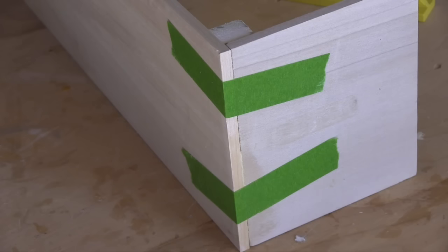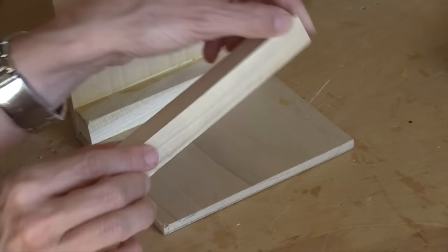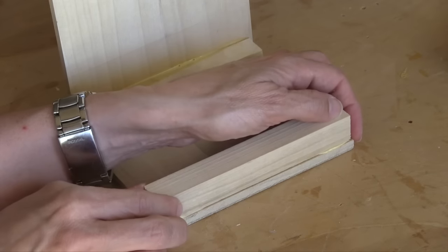Tape works really well to hold everything in place while the glue dries, but you could also use clamps. I glued the other two pieces to the back of the sides to give me more surface area for hanging.